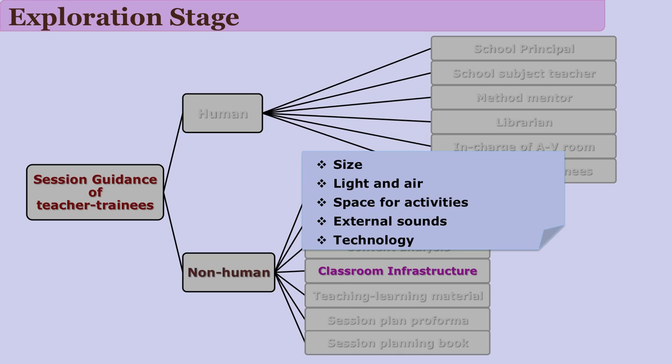For a non-human component, consider the classroom where the teacher trainee is going to teach. Light, air, ventilation, and technology available in the classroom are all very important. If the teacher trainee is thinking of some activities, whether that classroom provides facilities and space matters. If the teacher trainee wants to use technology, is there a projection system? If that room is very noisy, then that is a constraint and weakness that needs to be identified by the system developer.